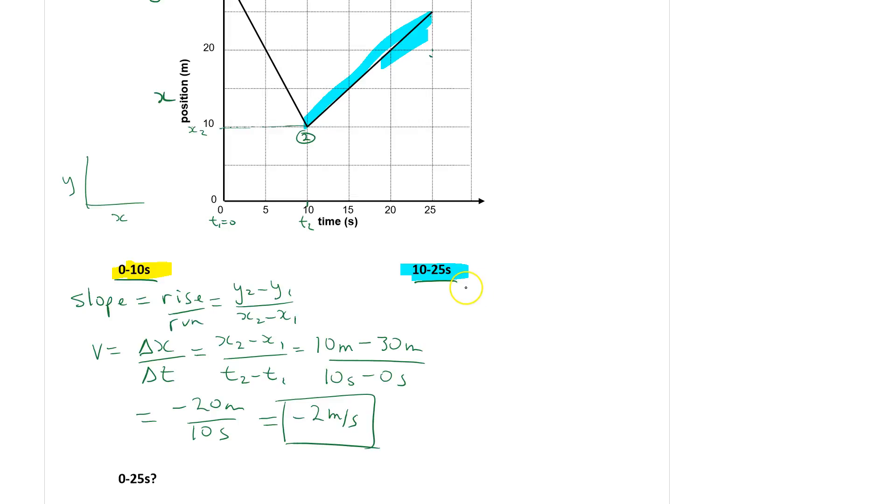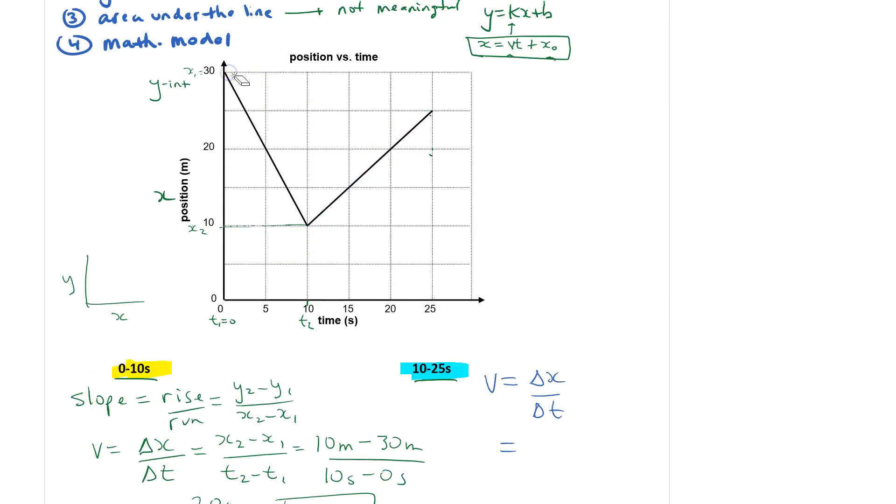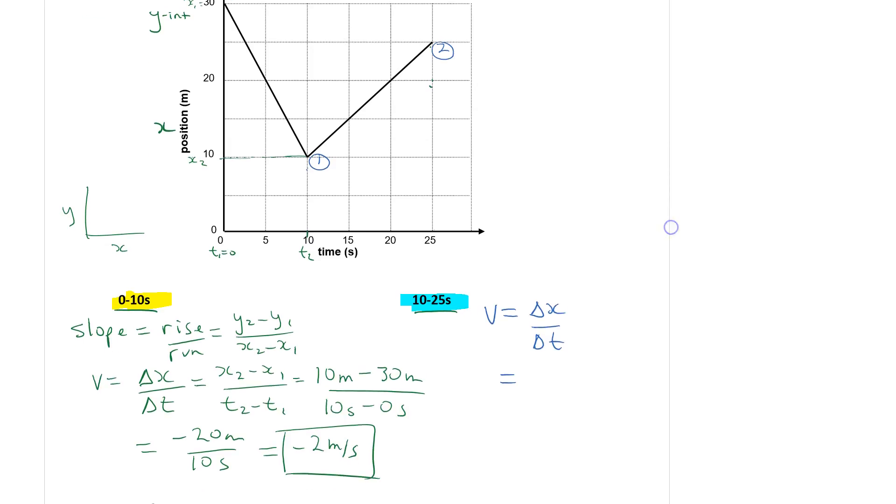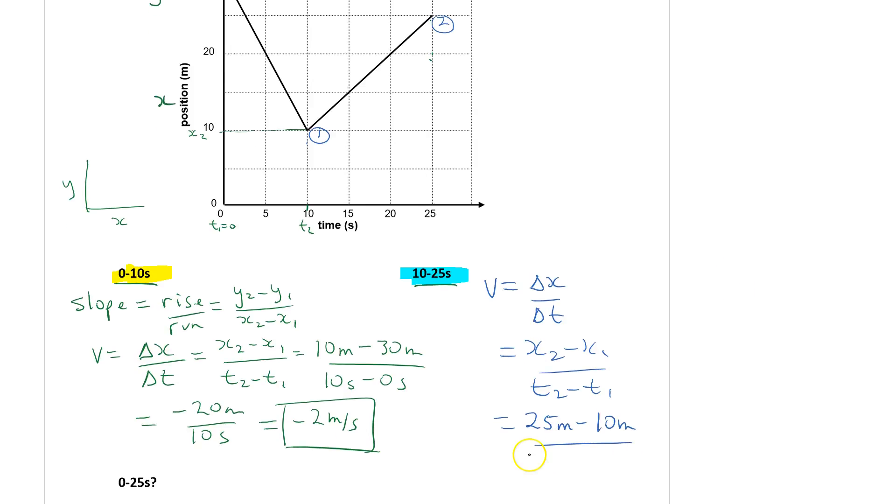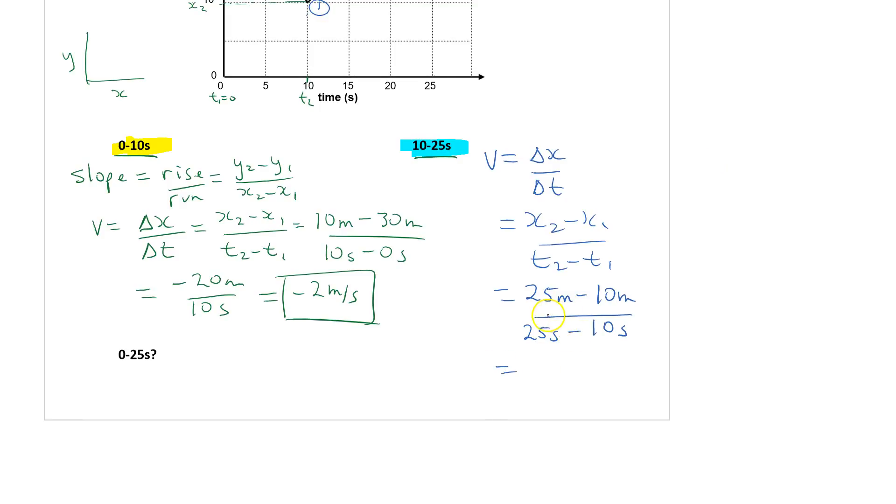Let's try 10 to 25. I'm going to say my v, my slope, is equal to the change in x divided by the change in time. Now my 1 and my 2 change. Before it was 1 here and 2 there. Now I'm going to look at the beginning of this line, so that would be 1, and the end of that line will be 2. When I type in x₂ minus x₁ over t₂ minus t₁, my final position is 25 meters minus the initial position which was 10 meters, all divided by the final time 25 seconds minus 10 seconds. So I'm going to get 15 meters divided by 15 seconds. 15 divided by 15 is 1, so I will get 1 meters per second.